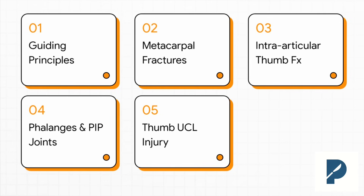Here's the plan. We'll kick things off with the big picture guiding principles. Then we'll dive into metacarpal fractures and those key numbers you've got to know. After that, thumb fractures — specifically the tricky intra-articular ones. We'll move on to the phalanges and PIP joints, and wrap up with a really important one: the thumb UCL injury, the Stener lesion.